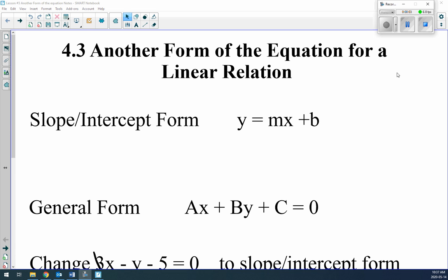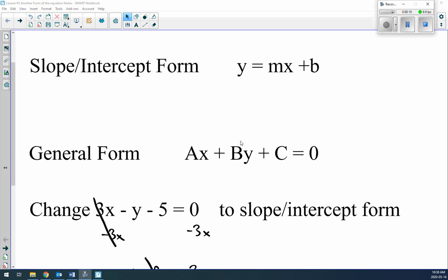Grade 9 math, 4.3, another form of the equation for a linear relation. We've already talked about slope-intercept form, y equals mx plus b. Remember, m is your slope, b is your y-intercept. But sometimes equations can come in different ways. General form is another way. We get general form, it's Ax plus By plus C.